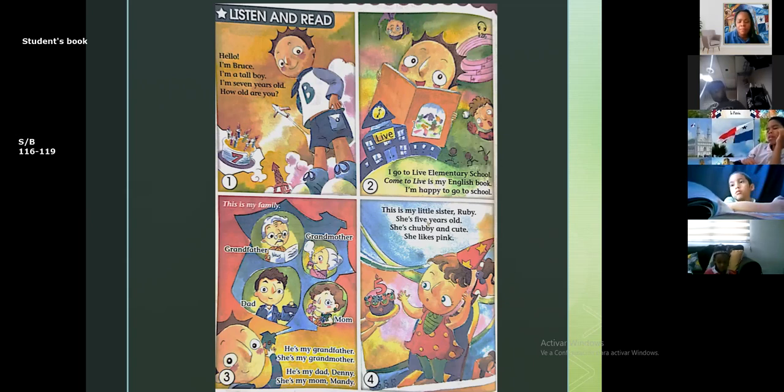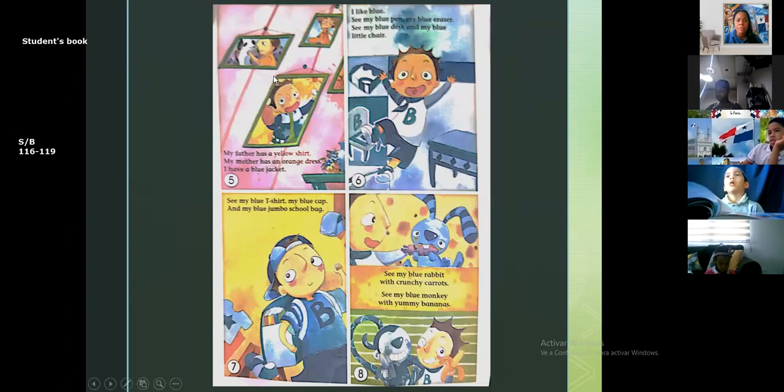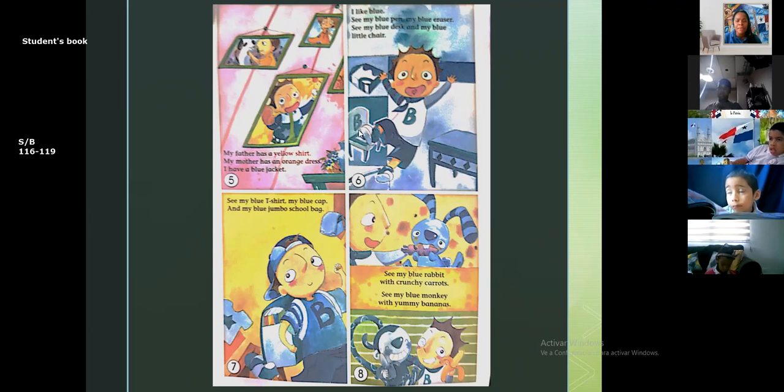Mi papá tiene una camisa amarilla y mi mamá tiene un vestido naranja. Y yo tengo una chaqueta azul. Me encanta el color azul. Mira mi bolígrafo azul, mira mi borrador azul, mira mi escritorio azul, mira mi silla azul. Mira mi suéter azul, mira mi gorra azul y mi bolsa grandota de escuela. Mi bolsa de escuela grande azul. Mira mi conejo azul con su zanahoria crujiente. Mira mi mono azul con su banana deliciosa.